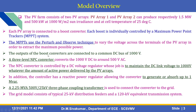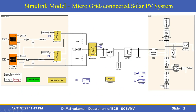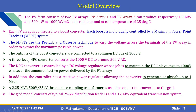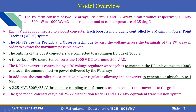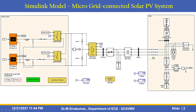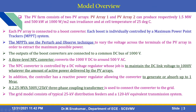MPPT uses the perturb and observe technique to vary the voltage across the terminals of the PV array in order to extract maximum possible power. The output of the boost converter is connected to a common DC bus of 1000 V. A 3-level NPC converter converts 1000 V DC to around 500 V AC. The NPC converter is controlled by a DC voltage regulator whose job is to maintain the DC link voltage at 1000 V regardless of the active power delivered by the PV arrays. In addition, the controller has a reactive power regulator allowing the converter to generate or absorb up to 1 MVAR.